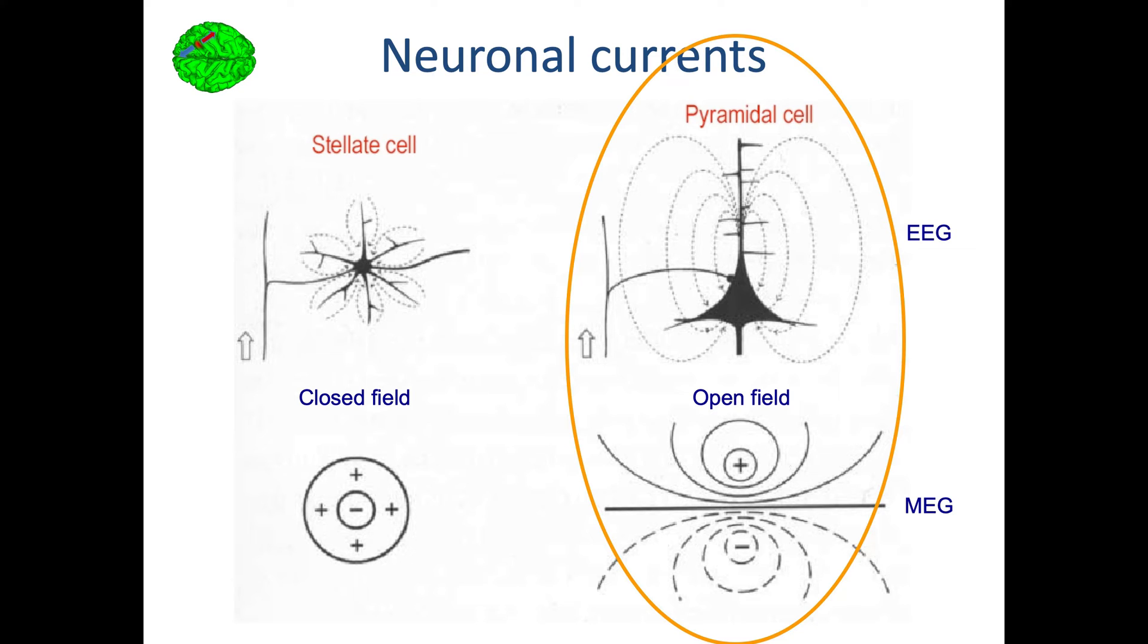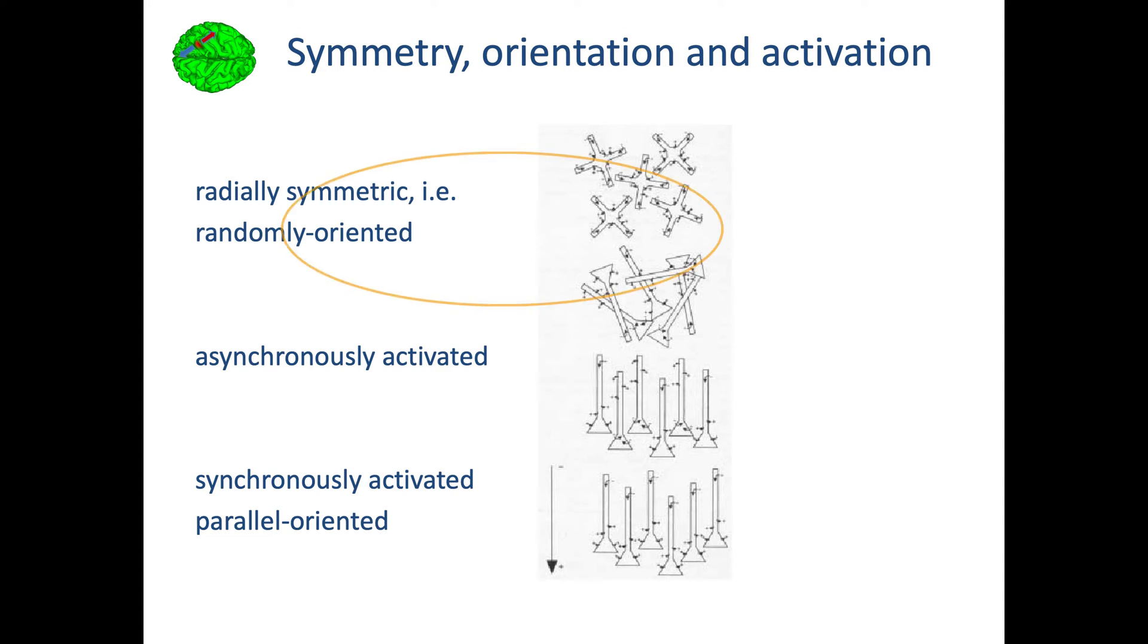Usually having just one of these cells is not enough to record a signal at the surface of the scalp. For instance, if you have a radially symmetric or randomly oriented pyramidal cell, you're not going to record potential at the surface of the scalp. If they are parallel but activated asynchronously at different times, you're not going to record potential at the surface of the scalp. You're only going to record a potential when they are parallel and activated simultaneously.